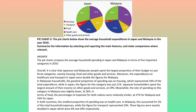In both countries, the smallest proportion of spending was on health care. In Malaysia, this accounted for 3% of total household expenses, while the figure for transport represented 10%. These figures were exactly doubled in Japan, which were 6% and 20% respectively.